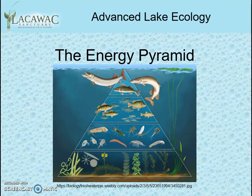Like other ecosystems, lake ecosystems have an energy pyramid of trophic levels. The sun provides the input energy for the pyramid, with the autotrophs or producers forming the base. In a lake, phytoplankton and aquatic plants form this producer layer. Zooplankton and other primary consumers form the next level, feeding on the producers. The top of the pyramid consists of consumers that feed on the layers beneath.